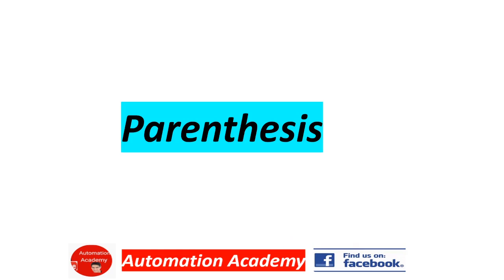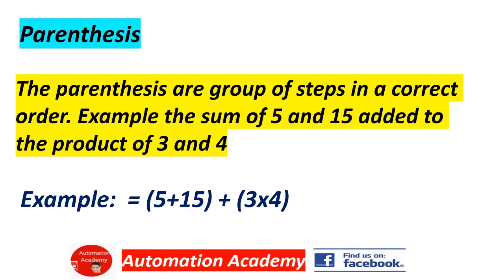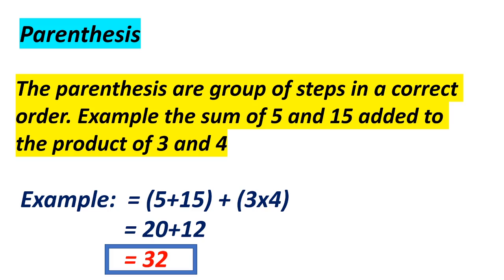Our next topic is Parentheses. Parentheses are a group of steps performed in a correct order. Example: the sum of 5 and 15 added to the product of 3 and 4 is written as (5 + 15) + (3 × 4). 5 plus 15 equals 20, plus 3 times 4 equals 12. The answer is 32.